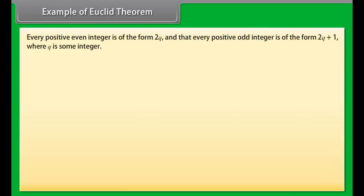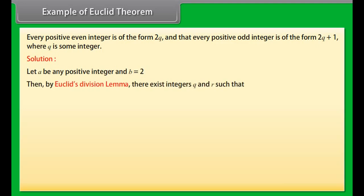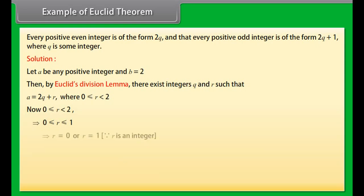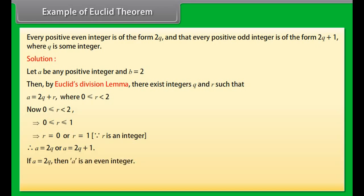Let us prove that every positive even integer is of the form 2q, and every positive odd integer is of the form 2q + 1, where q is some integer. Let a be any positive integer and b = 2. By Euclid's division lemma, a = 2q + r, where 0 ≤ r < 2, which implies r = 0 or r = 1. Therefore a = 2q or a = 2q + 1. If a = 2q, then a is an even integer. Since a positive integer is either even or odd, any positive odd integer is of the form 2q + 1.